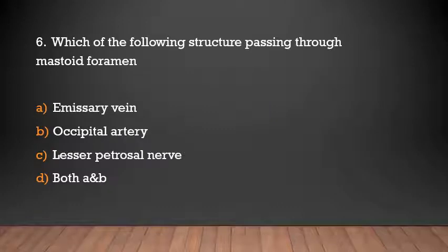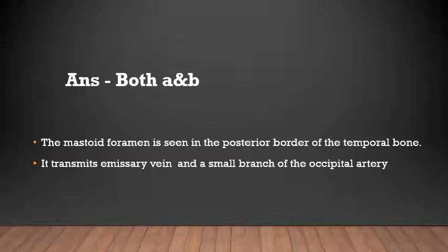Which of the following structures pass through the mastoid foramen? Emissary vein, occipital artery, lesser petrosal nerve, or both A and B? The answer is both A and B. The mastoid foramen is seen in the posterior border of the temporal bone and transmits the emissary vein and a small branch of the occipital artery.